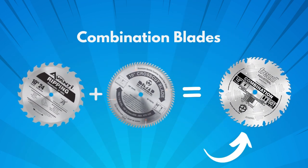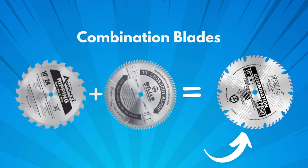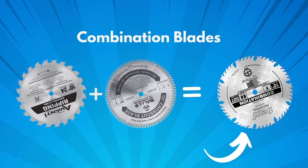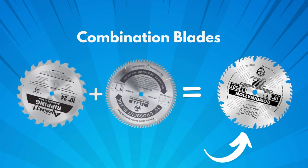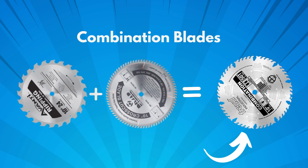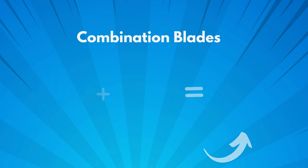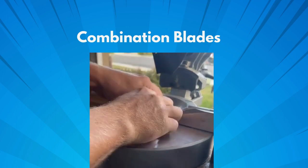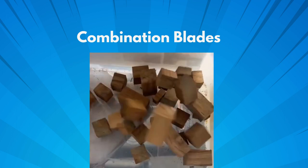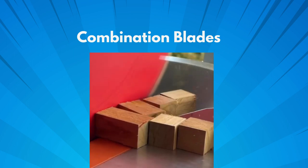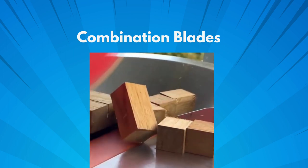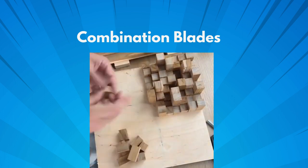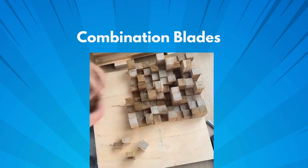Moving on, let's discuss combination blades. Combination blades, as the name suggests, combine features of both crosscut and ripping blades. You'll notice the varied tooth design, incorporating elements of both types. When should you consider using a combination blade? These blades are best suited for general woodworking tasks, especially when you don't want to switch between blades frequently. They're versatile, allowing for both crosscuts and rip cuts without needing to change the tool — meaning less downtime and more efficient work.